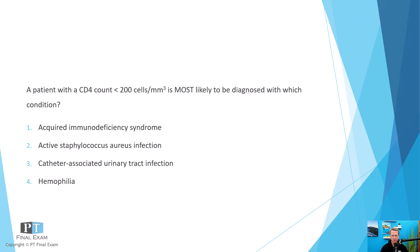One: acquired immunodeficiency syndrome. Two: active Staphylococcus aureus infection. Three: catheter-associated urinary tract infection. And four: hemophilia. So again, a patient with a CD4 count less than 200 cells per millimeter cubed is most likely to be diagnosed with which condition?